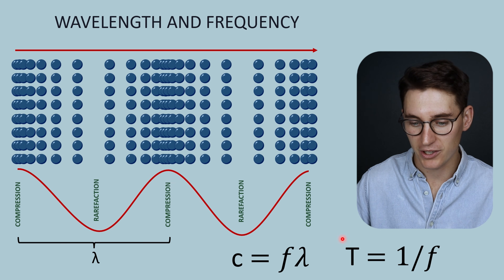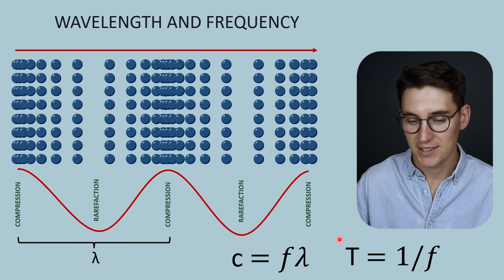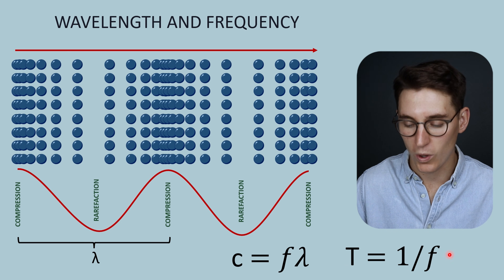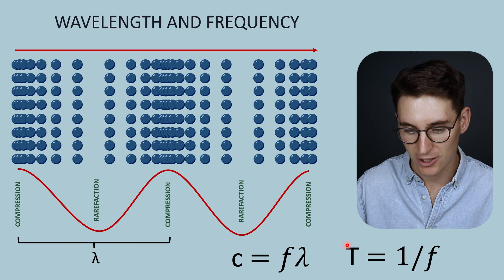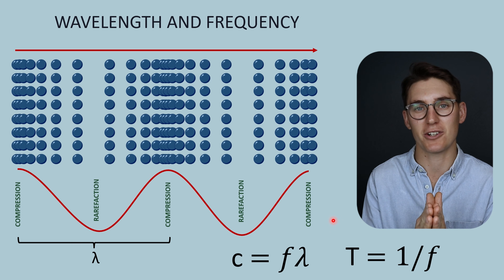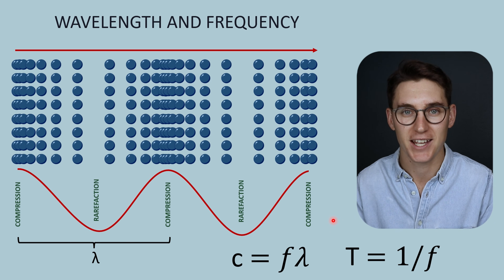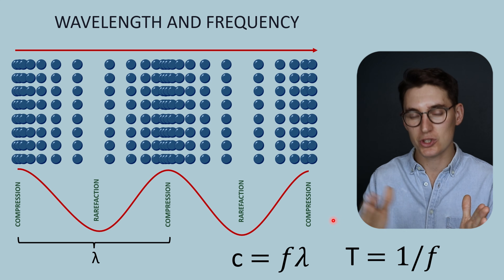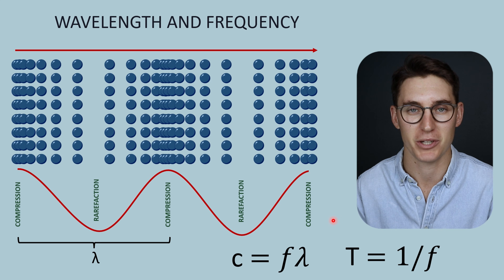What is known as period is represented by the letter T. Period is inversely related to frequency — if we take one and divide it by the frequency in hertz, we will get our period. Period is the amount of time for one cycle of a wave to pass a particular point, measured in units of time.